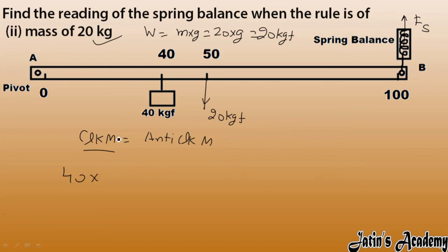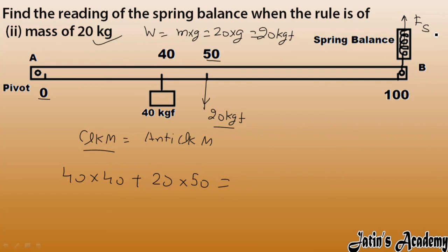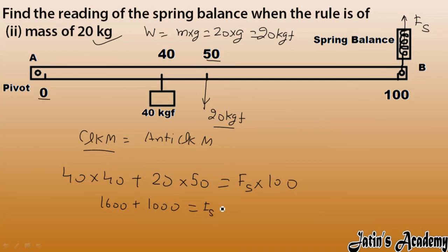Clockwise moments: 40 kgf at 40 cm gives 40 × 40 = 1600, and 20 kgf at 50 cm (distance from pivot = 50 − 0 = 50) gives 20 × 50 = 1000. The spring force Fs creates the anticlockwise moment: Fs × 100. So: 1600 + 1000 = Fs × 100, giving 2600 = Fs × 100, and therefore Fs = 26 kgf.